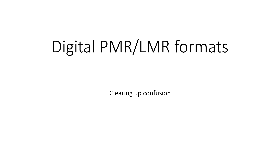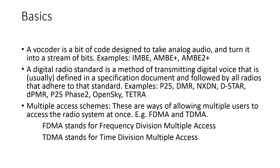In this video I'm going to clear up the confusion about digital PMR and land mobile radio standards. To start with the basics: a vocoder is a bit of code designed to take analog audio from the microphone of the radio and turn it into a stream of bits, which is then sent over the air. Some examples of vocoders are IMBE, AMBE Plus, and AMBE 2 Plus.